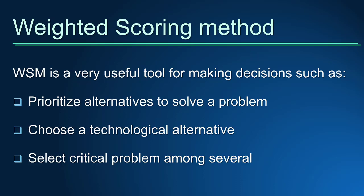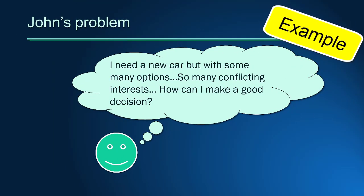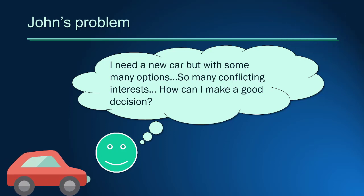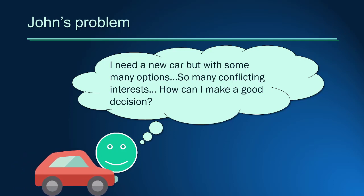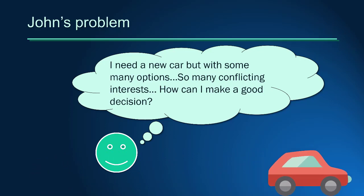First, let's see how the method works in a simple example. John needs to buy a new car, but he is very confused with so many options. He is thinking about a cheaper and fuel-efficient model, but his family is asking for a big and fancy car. His decision involves conflicting interests that are difficult to accommodate.